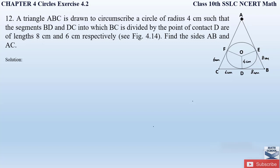For external point A there are 2 tangents AF and AE whose length is unknown. So we will take the length of AF as x cm, and AE will also be x cm. We have to find the value of x to determine the lengths AB and AC.